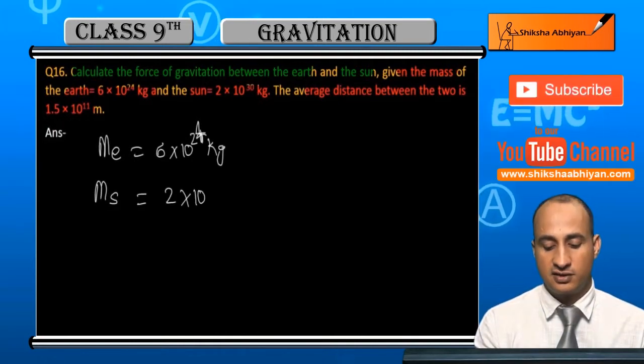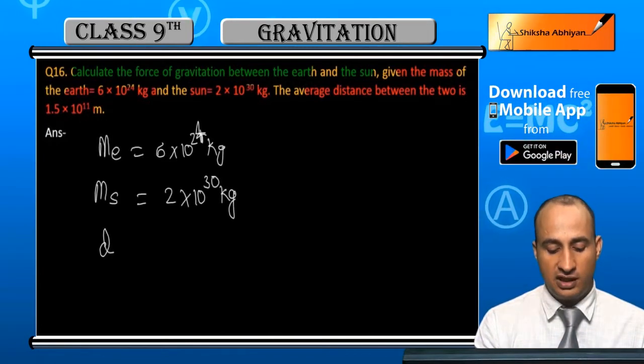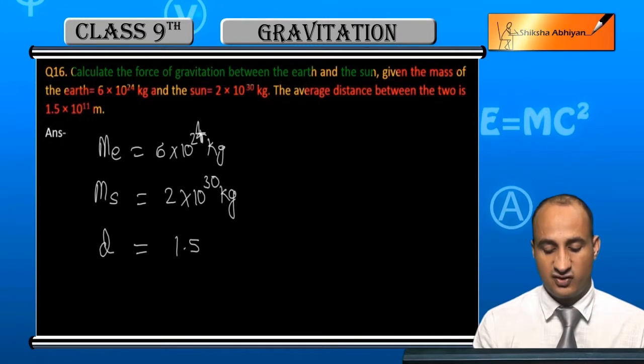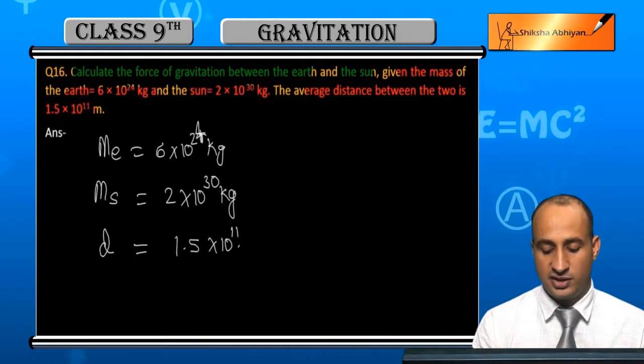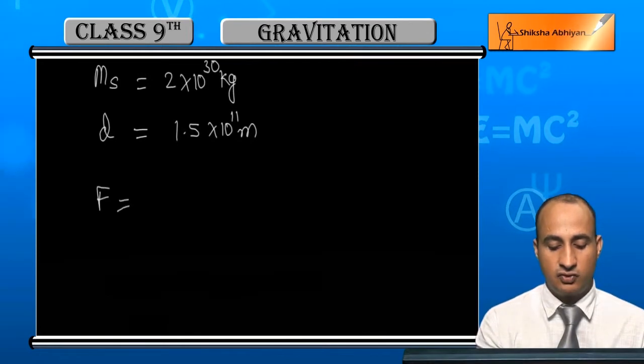Now, distance between them, d = 1.5×10¹¹ meters. The force will be F equals gravitational constant G times mass of Earth times mass of Sun divided by distance squared.